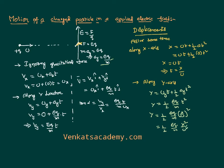If we look at this equation, ½, e, q, m, and u are all constants. Taking all these together as a constant k, we can write y = kx². This is the mathematical representation of a parabola.